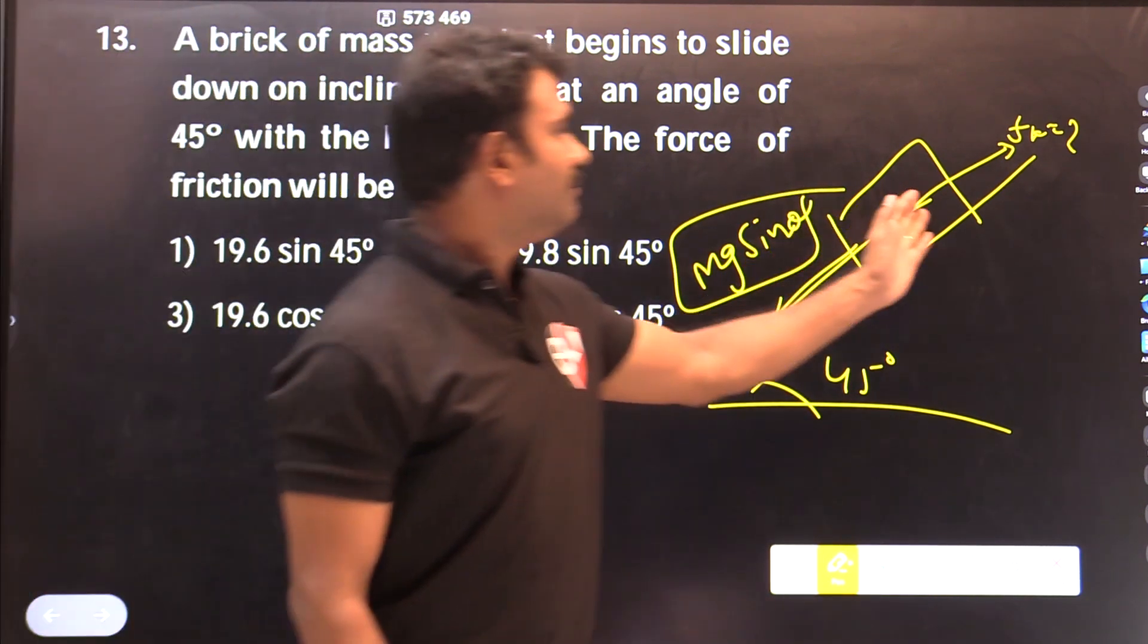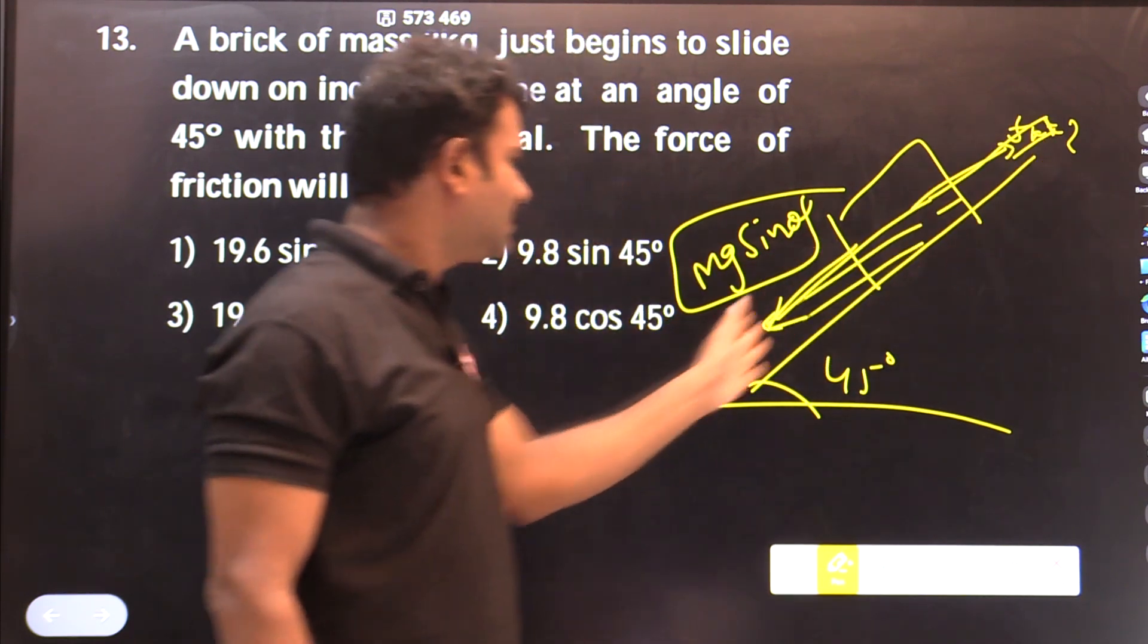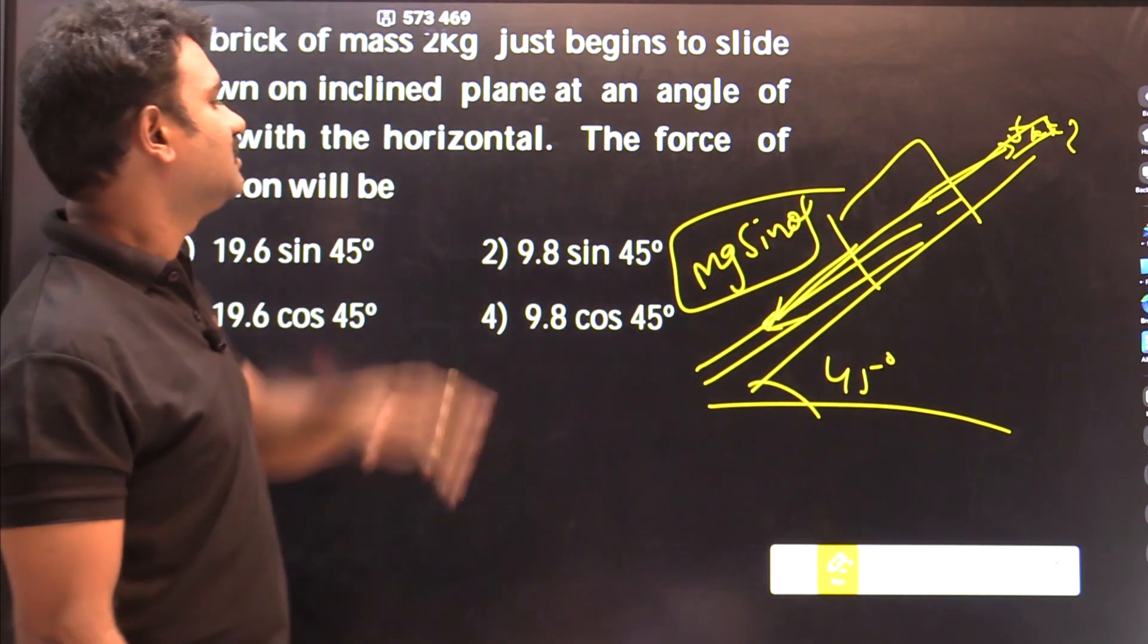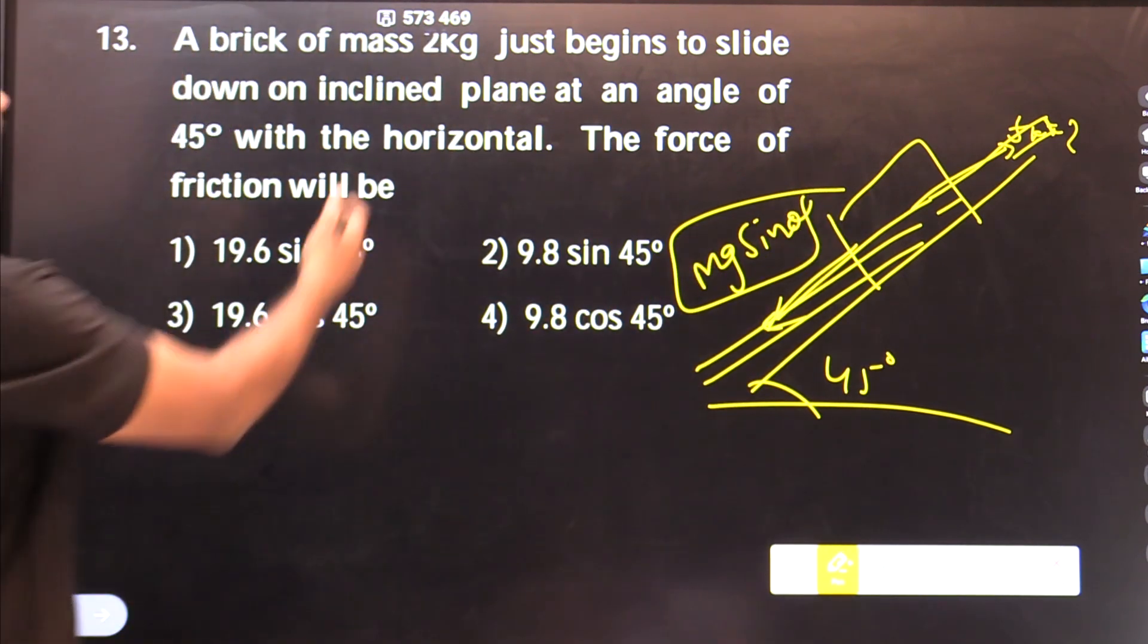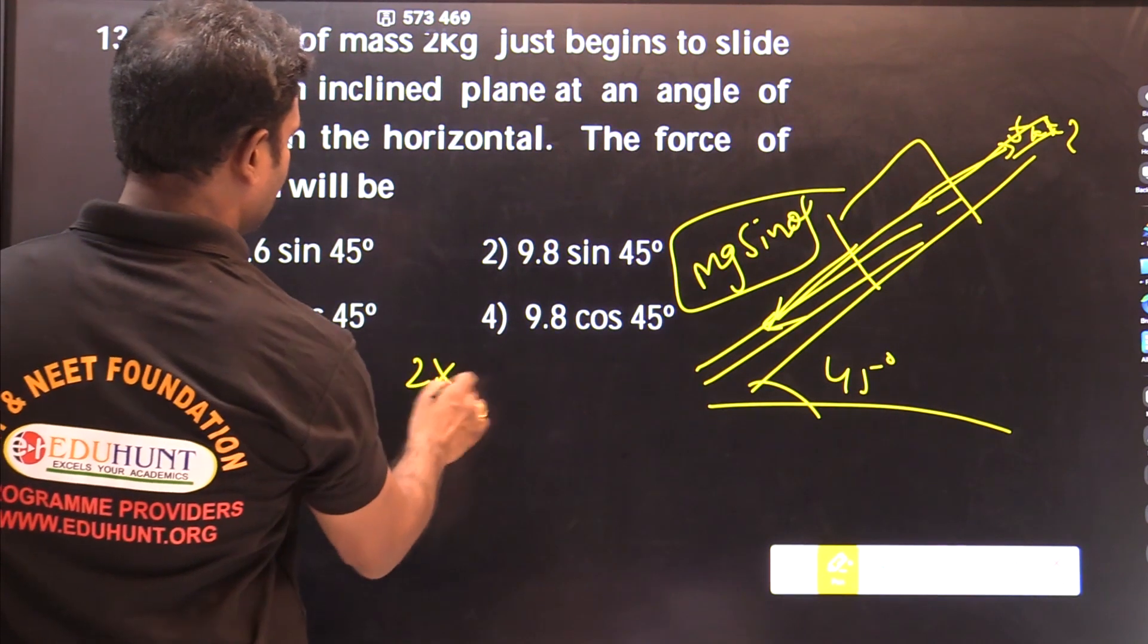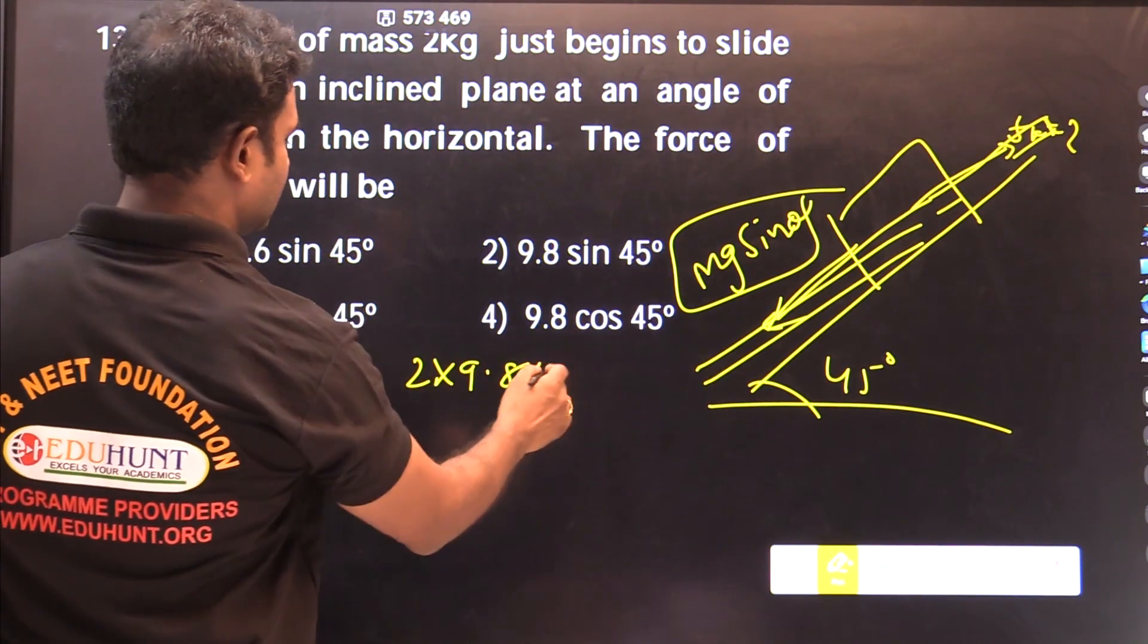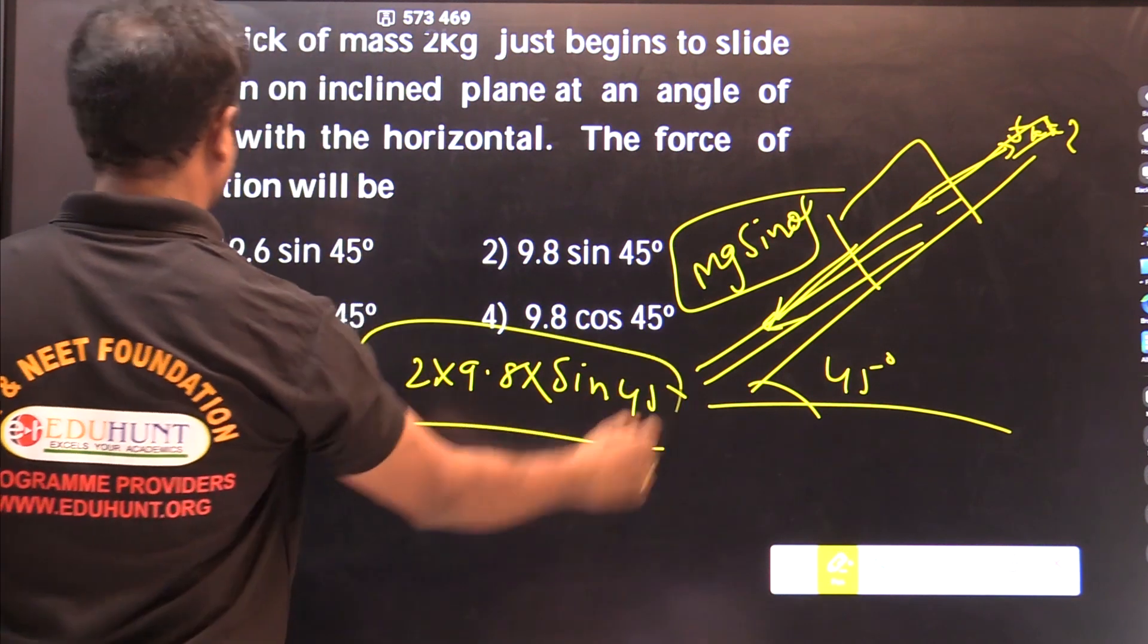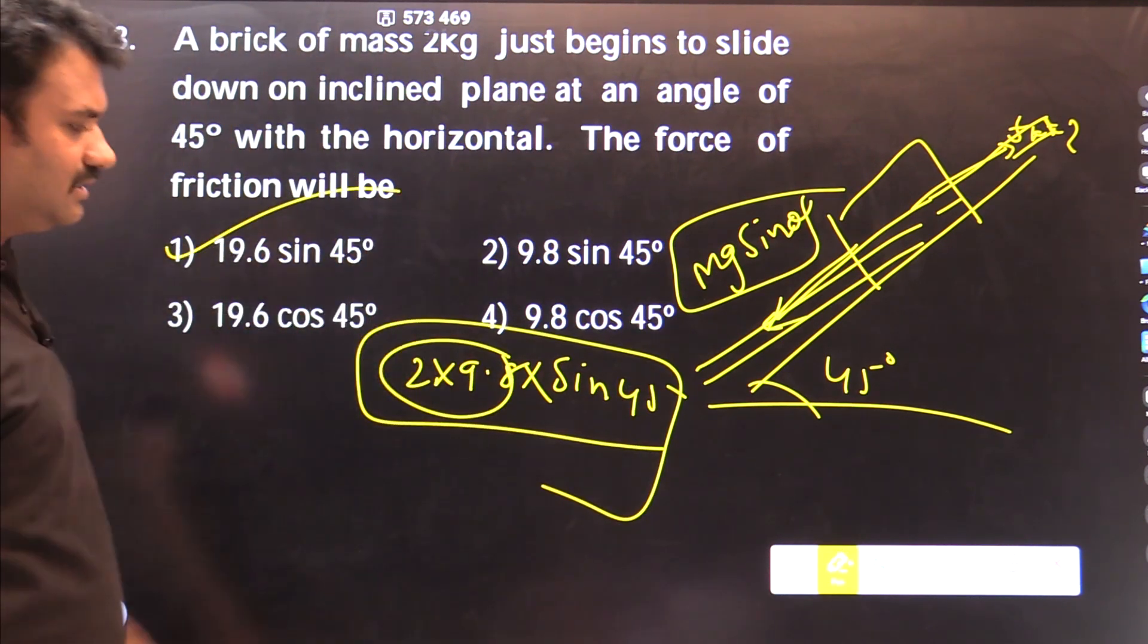The friction force equals gravitational force. The answer is Mg sin theta. M times g times 9.8 into sin theta sin 45. So what is the answer? 9.8 into 2. That's it.